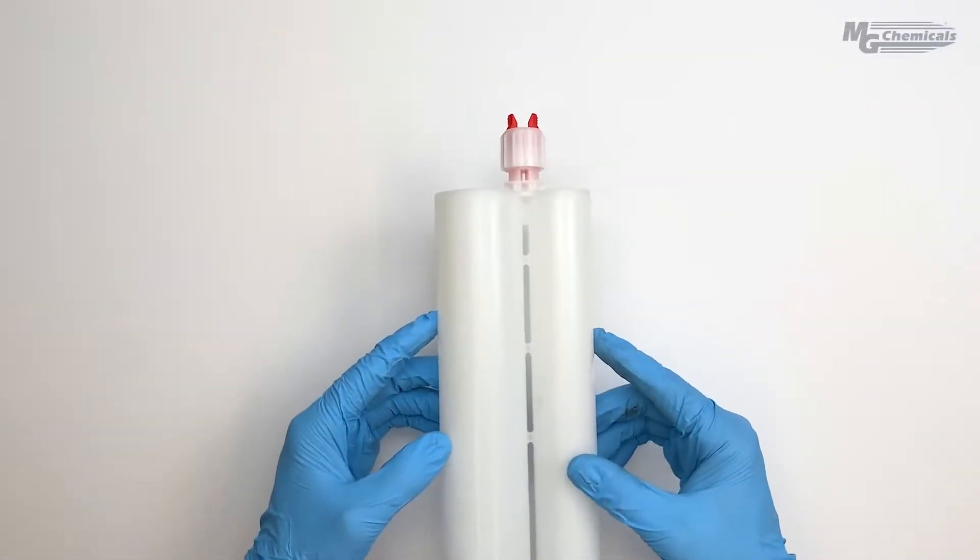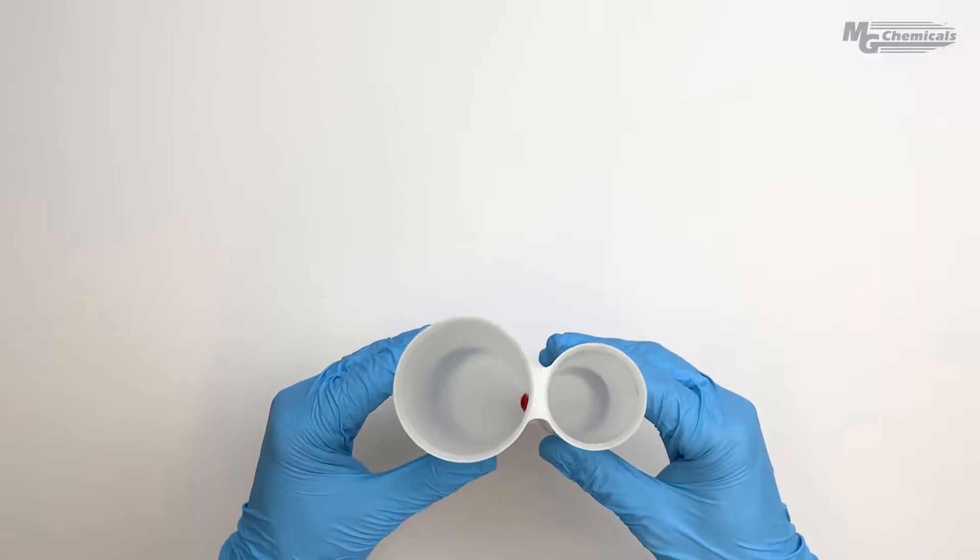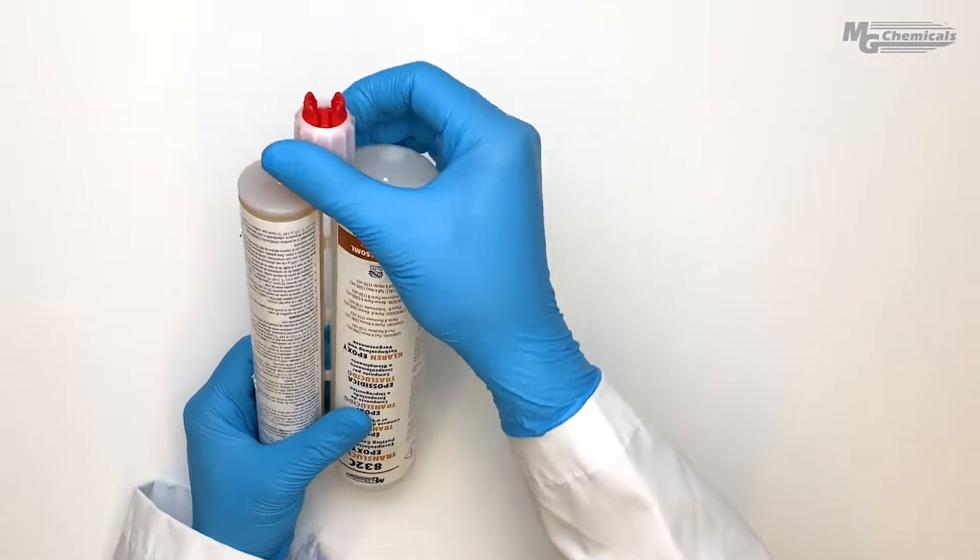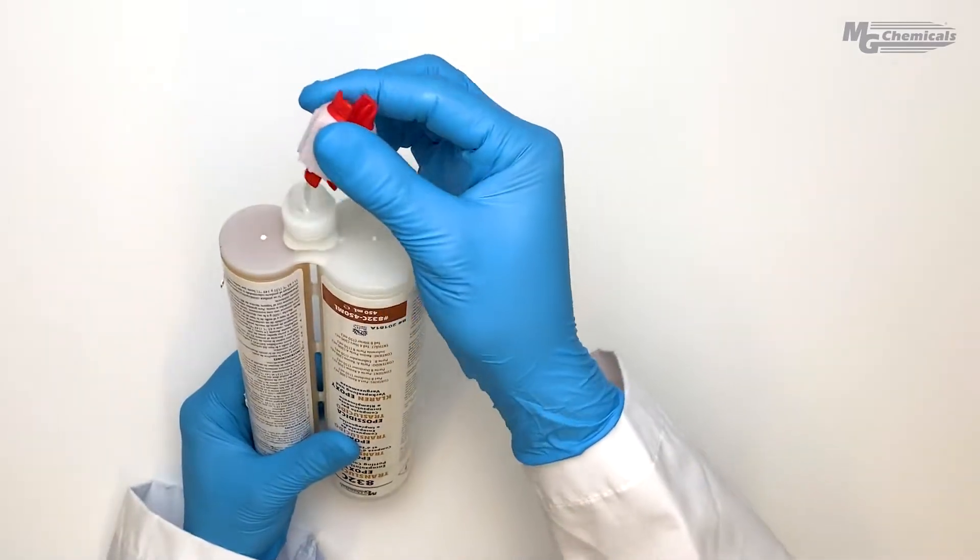Finally, for two-to-one systems we have a 450 ml cartridge. Start by removing the cap, removing the red plug,